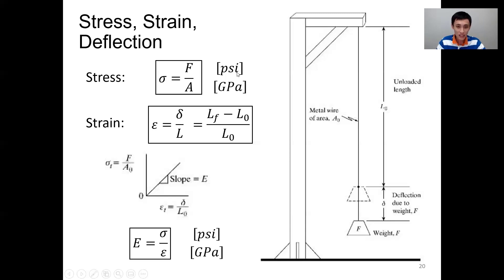Or in English units, we use psi, which is pound per square inch. Or sometimes if the numbers are too big, we probably use Ksi. So this is stress.